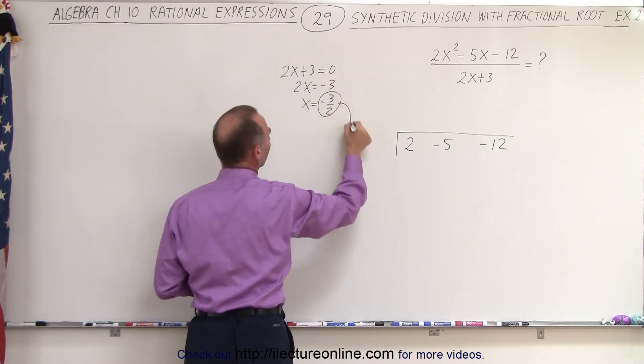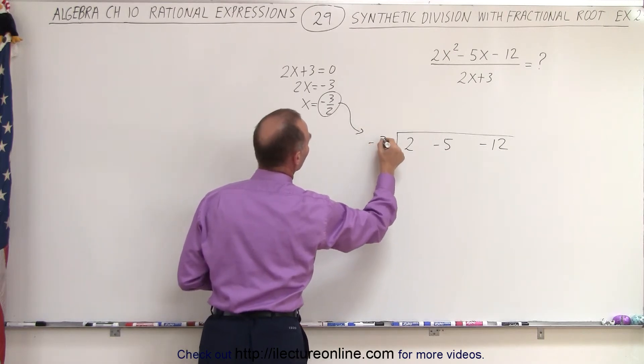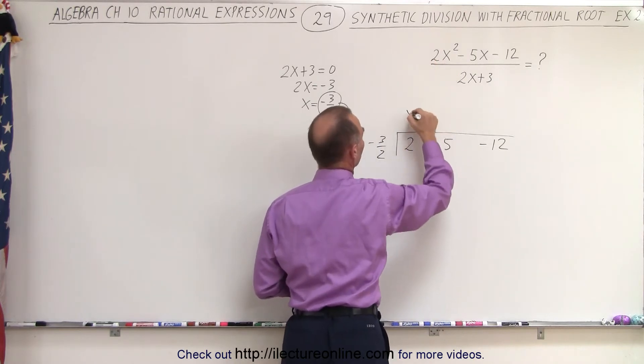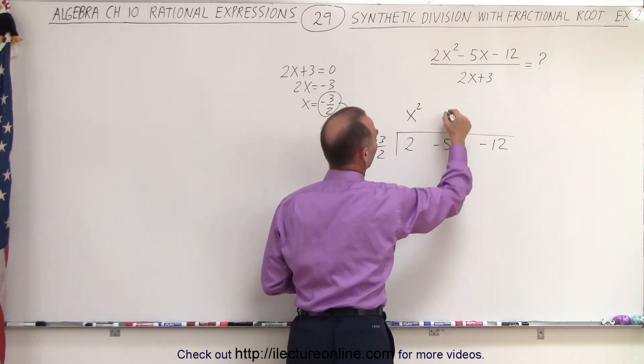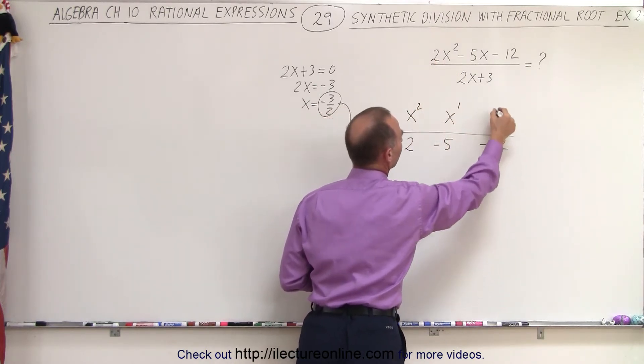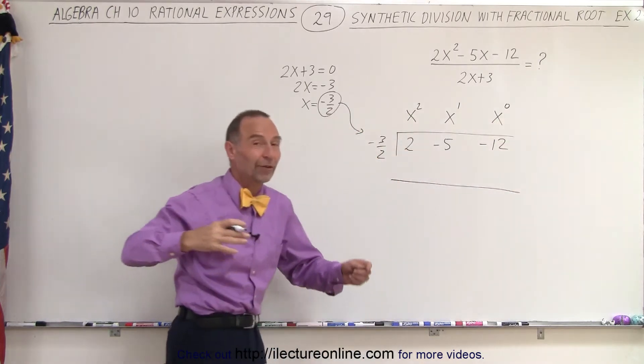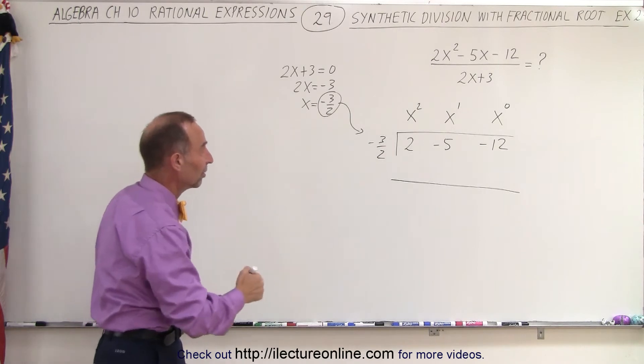And that's the number that goes over here: minus 3 over 2. Remember that these numbers represent the first term, which is the x squared term, the second term, x to the first, and the x to the 0 term. Now we draw a line, and again we follow the very same process that we always do with synthetic division.